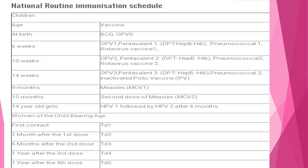For women of childbearing age: at first contact, TD1; at one month after the first dose, TD2; at six months after the second dose, TD3; one year after the third dose, TD4; and one year after the fourth dose, TD5. This concludes all the content for today. Thank you for your attention.